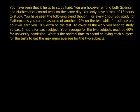And you have seen the following trend though. For every one hour you study for mathematics, you can be assured of another 12% on that test, while for science one hour will earn you 10% extra on the test. To cover all the work, you need to study at least 5 hours for each subject. Your average for the two subjects must be 60% for university admission. What is the optimal time to spend studying each subject for the test to get a maximum average for the two subjects?